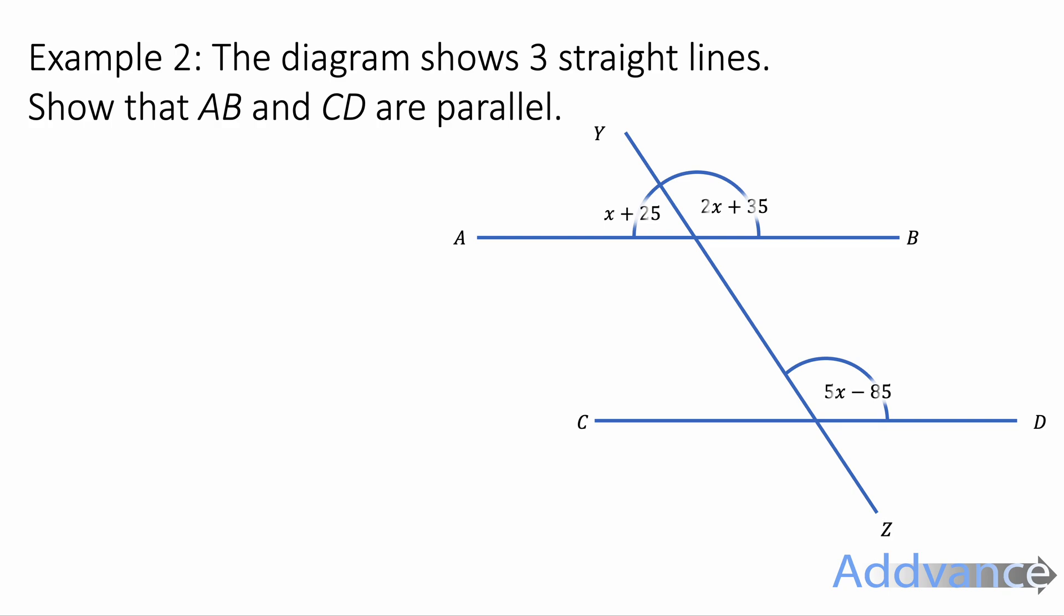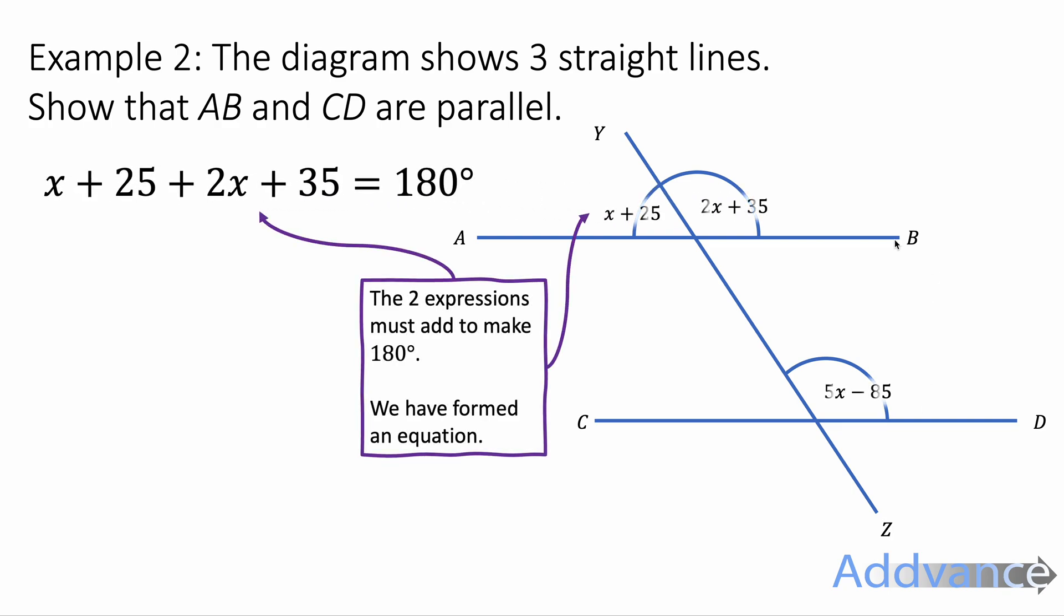We're going to use the information in the picture. So first we see that these two angles, the x plus 25 and the 2x plus 35, are angles on a straight line. They must add up to 180 degrees. So we can add them together to make 180 degrees. We have formed an equation again.